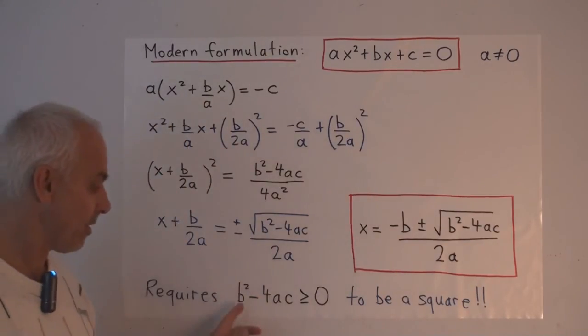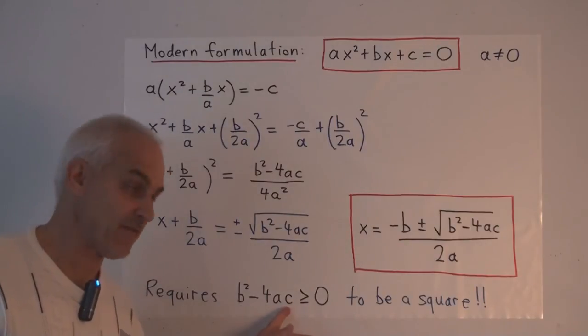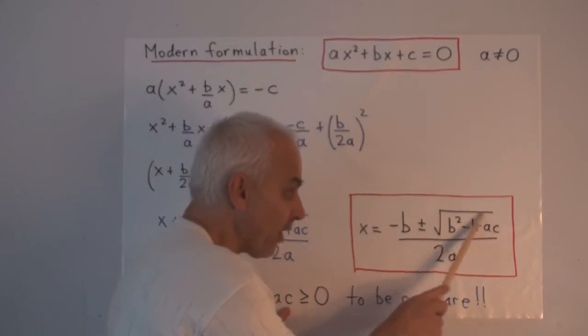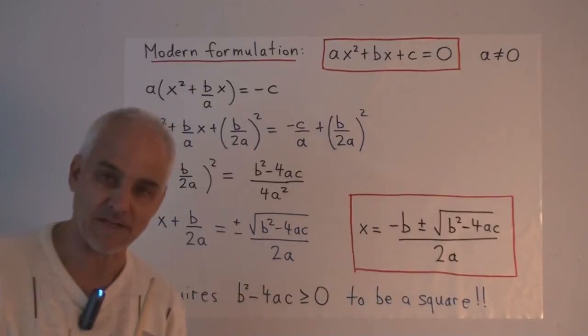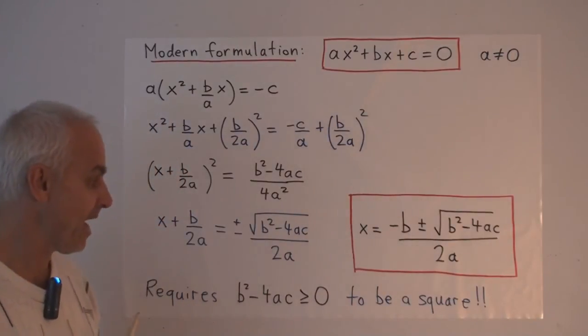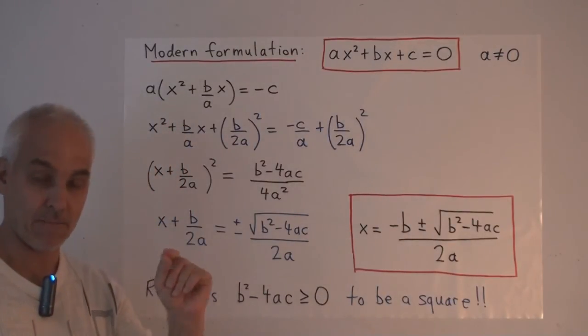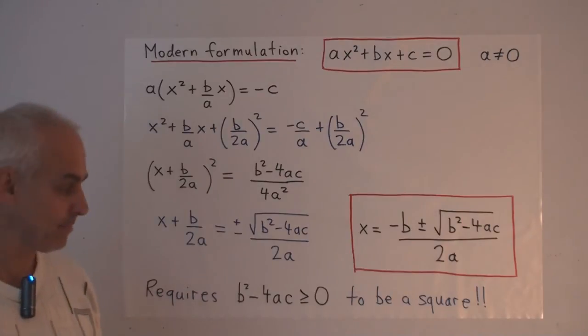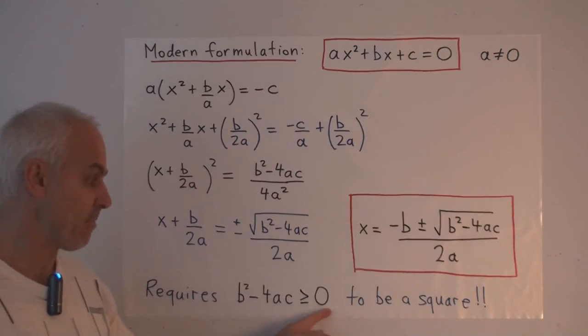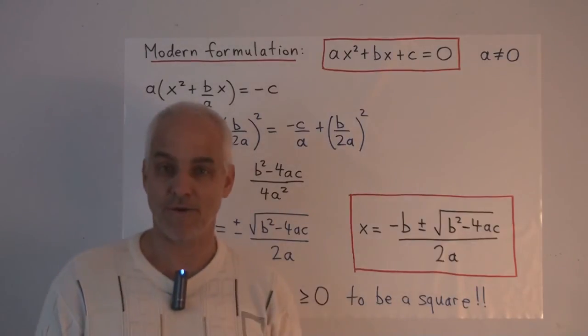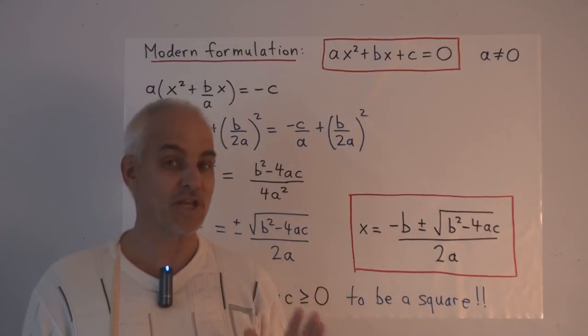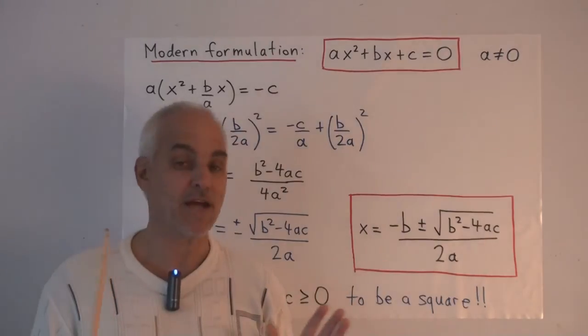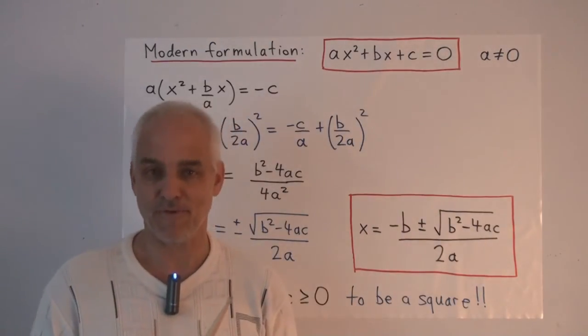That what's inside here, this b squared minus 4ac term, had better be a square because we want to take the square root of it. So in particular, it's got to be positive. It's got to be positive and it's got to be a square, because right now we're still working in the realm entirely of rational numbers.